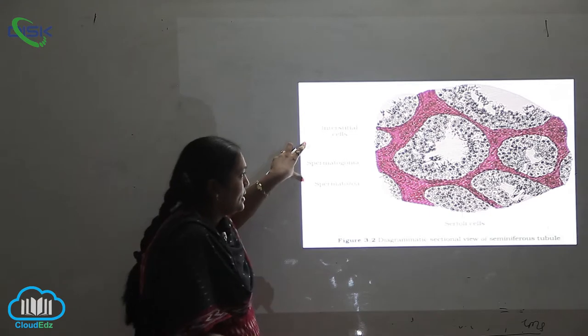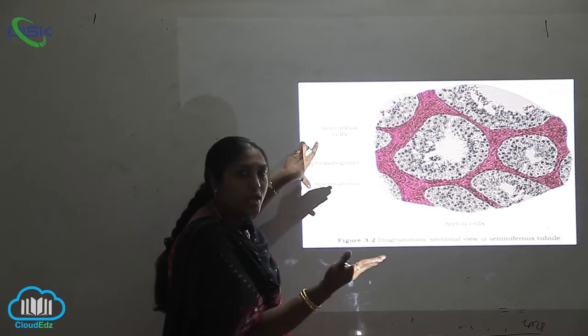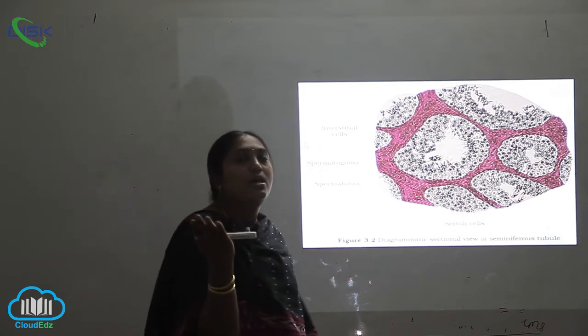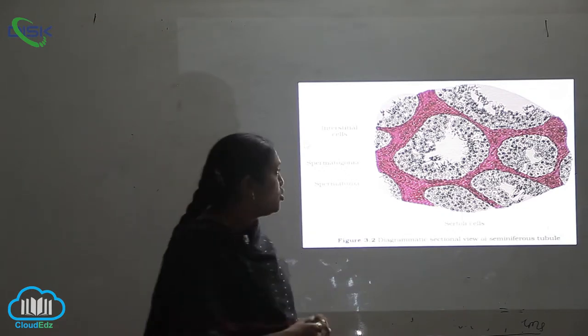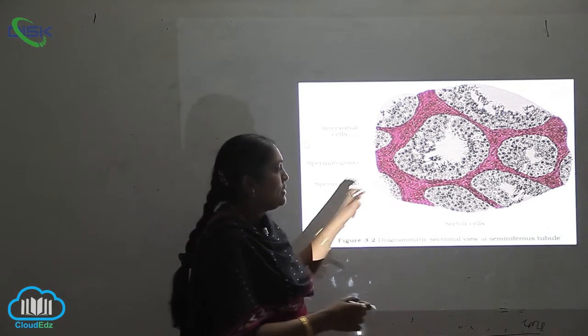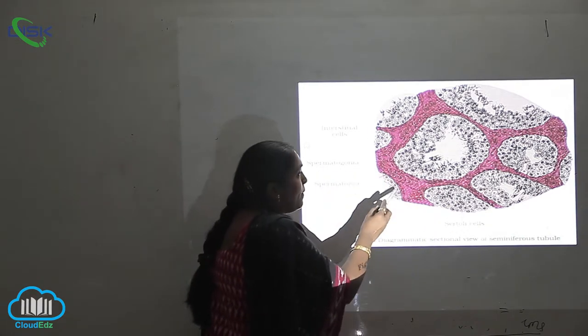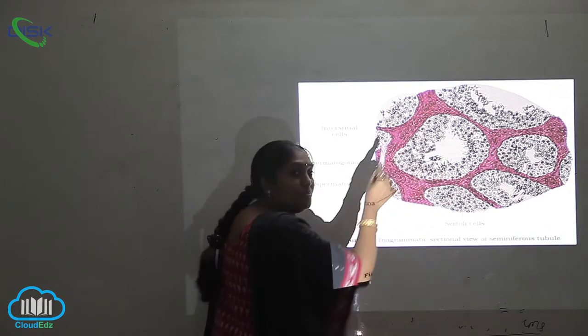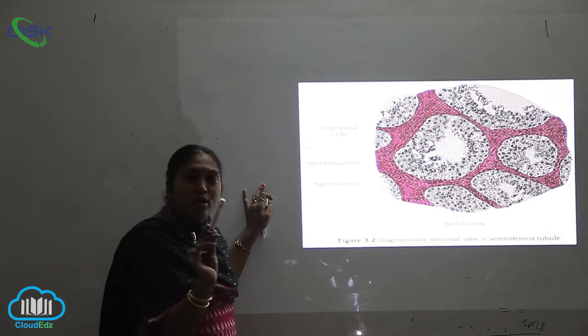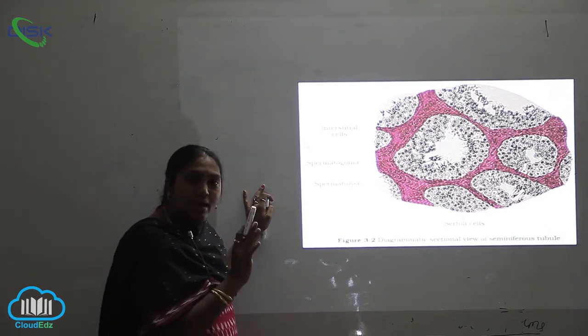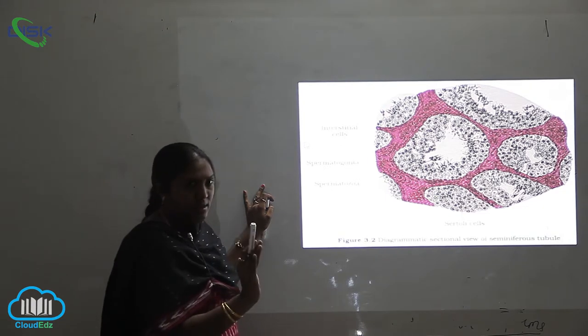See how interesting it is when you see the seminiferous tubules transverse section under the microscope. The structure is like this, which is completely circular in shape and it is composed of different types of cells and muscles which is completely muscular in nature. When you are not having any bones, we say it is muscular in nature.